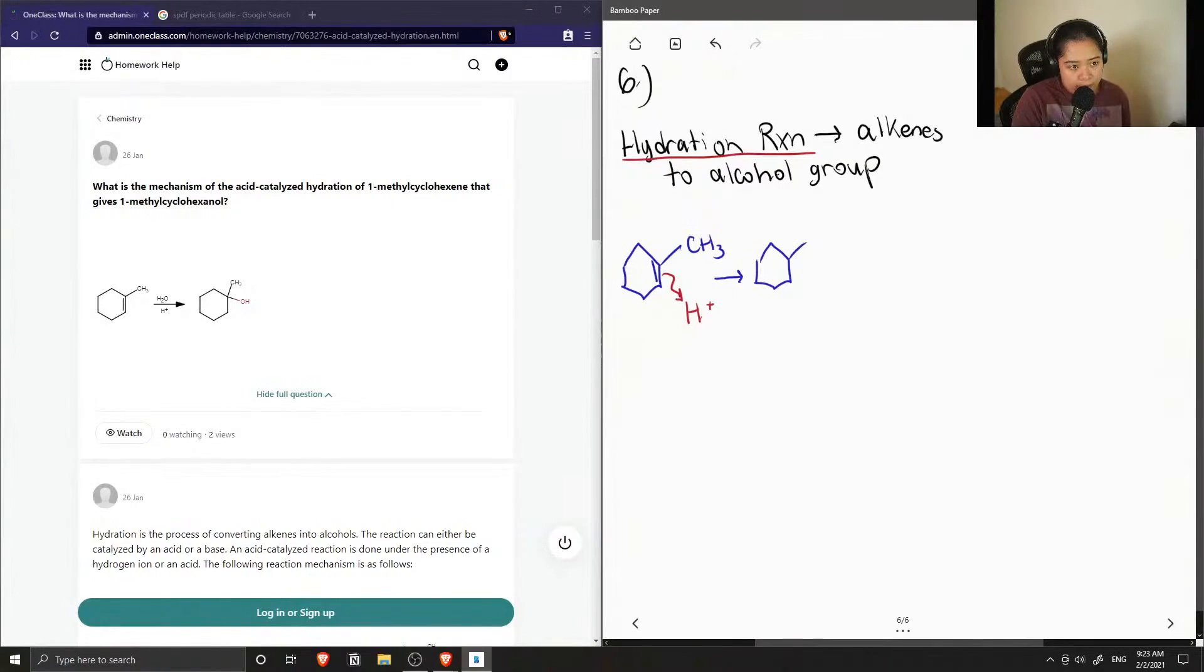After the double bond gets protonated, our double bond gets reduced to a single bond, and we can show our hydrogen atom that is now on our compound. Note that I could have put the hydrogen atom on the other carbon, but since there's a methyl group here, this is more likely to hold the positive charge that would occur when the double bond is reduced.